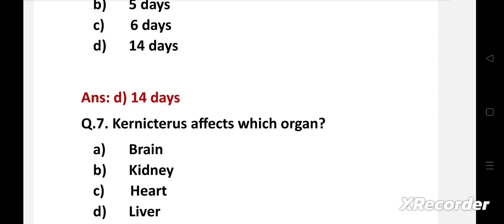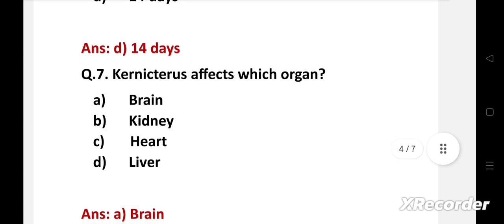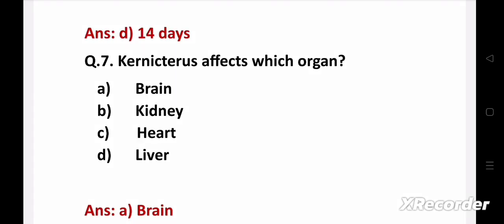Kernicterus affects which organ? Option A brain, B kidney, C heart, D liver. Right answer is option A, brain. Kernicterus is a complication of neonatal jaundice. The word kernicterus means yellow kern, kern being the structures of the brain that are most commonly affected.